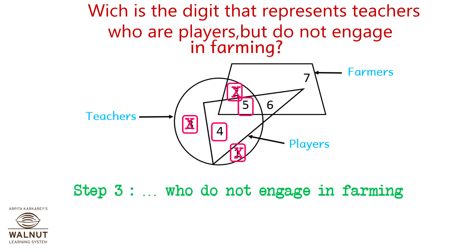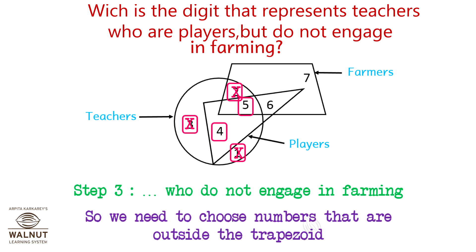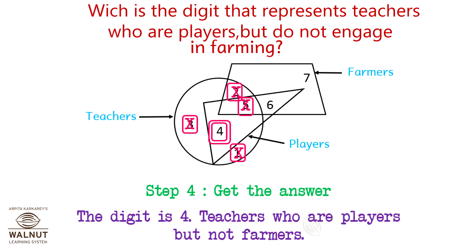Step 3: Who do not engage in farming? Numbers in the trapezoid engage in farming, so we need to choose numbers that are outside the trapezoid. We have to cancel out 5, and that leaves us with the number 4. So the digit is 4 — teachers who are players but not farmers.